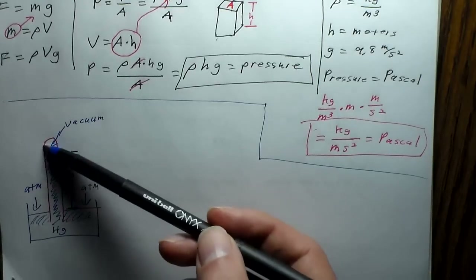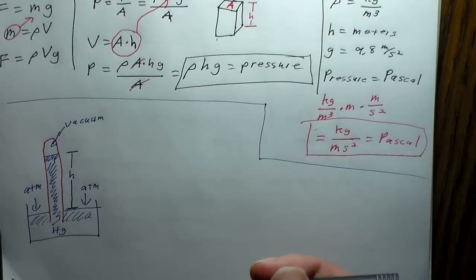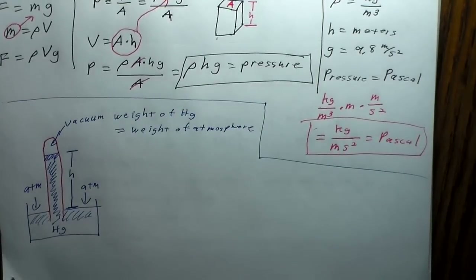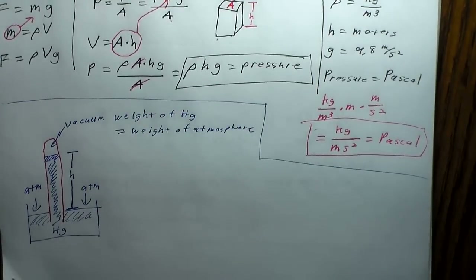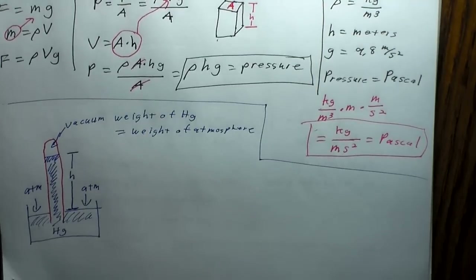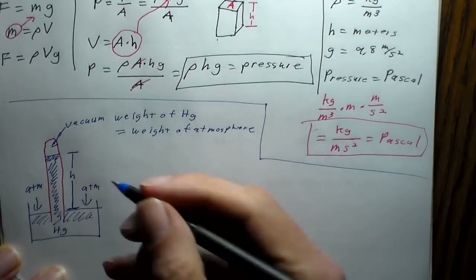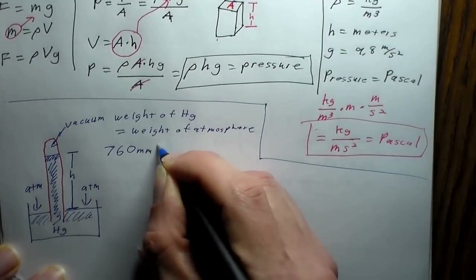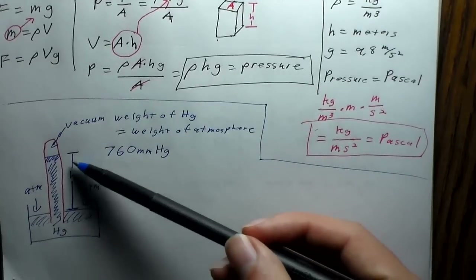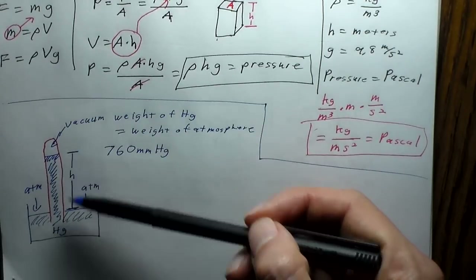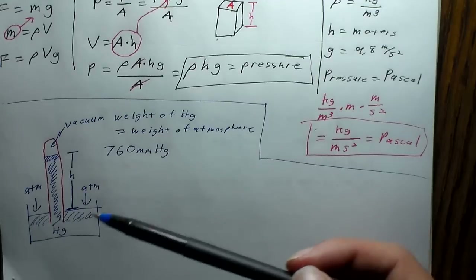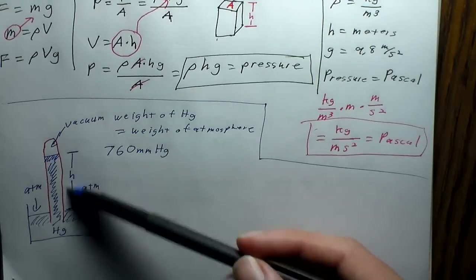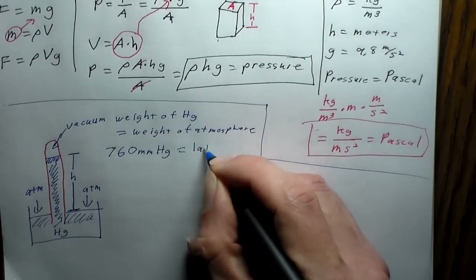That's why barometers work — the weight of the mercury inside the tube equals the weight of the atmosphere pushing it up. If the tube were open to the air, nothing would happen. They discovered that repeating this experiment always gave basically the same height, and we've defined that height as one atmosphere of pressure: 760 millimeters of mercury.